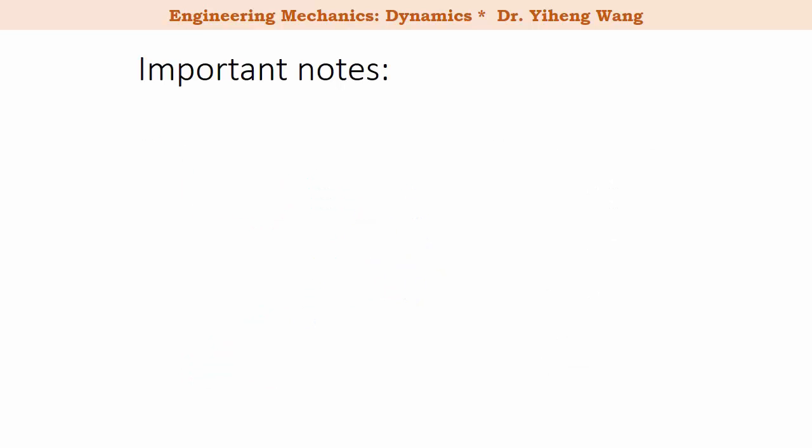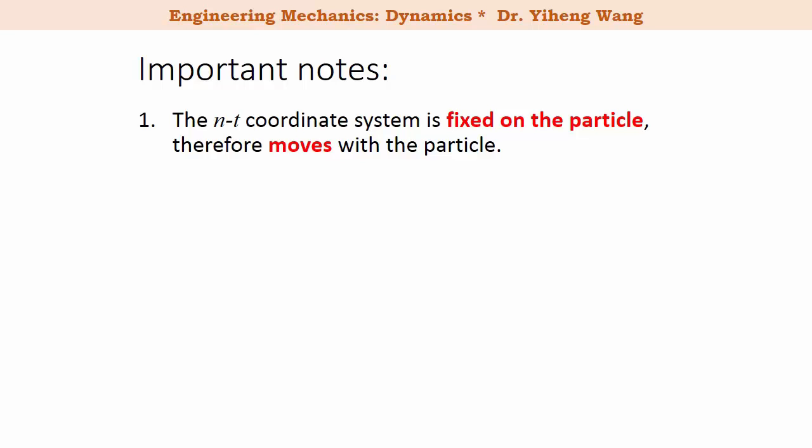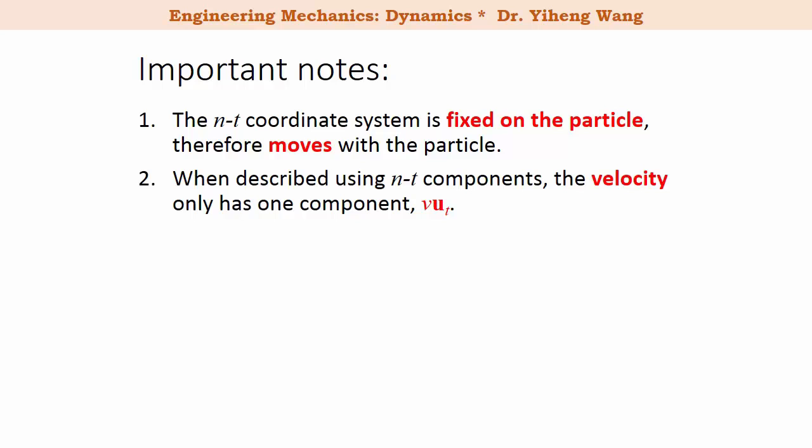Here are some important notes when using normal and tangential components to describe curvilinear motion. First, unlike the rectangular coordinate system which is generally fixed on earth, the n-t coordinate system is fixed on the particle, therefore it moves with the particle and changes from time to time. Second, one of the biggest advantages of using n-t components is that the velocity always has only one component — along the tangential direction.